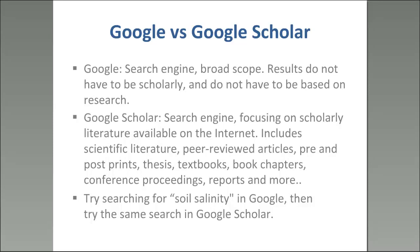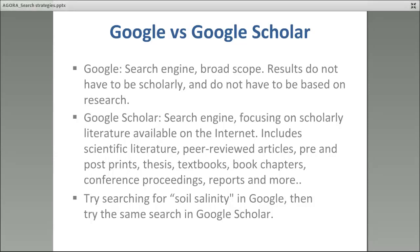Many of you also use Google and Google Scholar to search — they're both great resources but a little different. When searching in Google, you're searching everything; it may not be scholarly, but you can get news and images, which can be useful for keywords or recent developments on a topic. However, if you're looking for more research-focused material, use Google Scholar, which provides links to scholarly literature including peer-reviewed articles, preprints, postprints, and textbooks. Try searching the same term in both and you will see the difference.